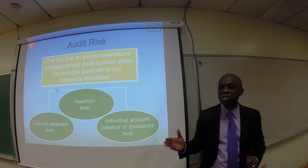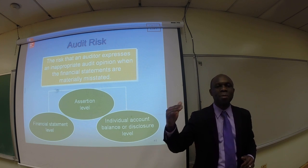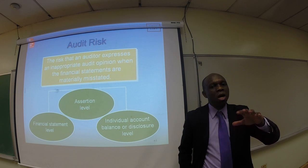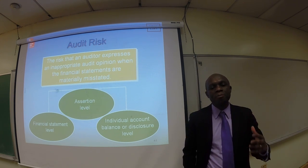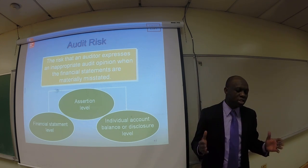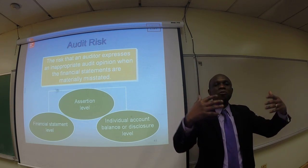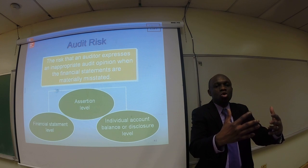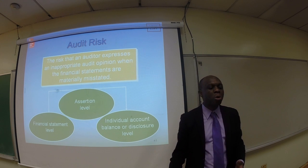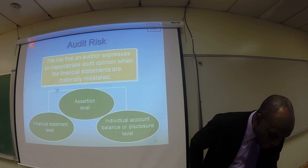Let's take a look at where these risks might be coming from. At the assertion level — we talked about assertions a great deal — assertions are claims made by management as reflected in the financial statements. This risk could come from the standpoint that almost anything could go wrong in the financial statements as a whole, or the risk can come from individual account balances or at the disclosure level.